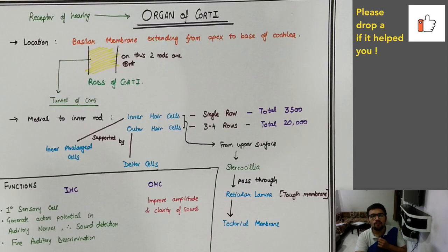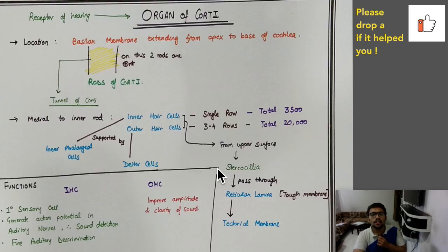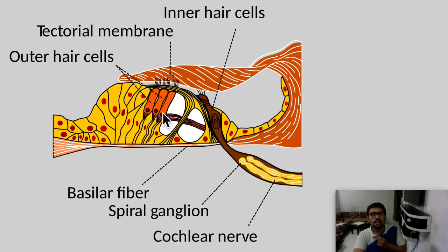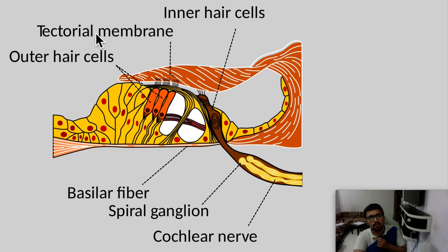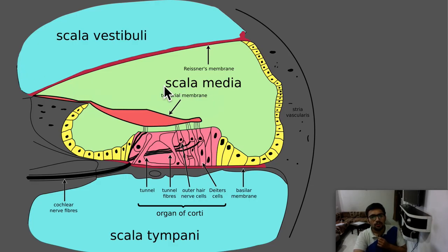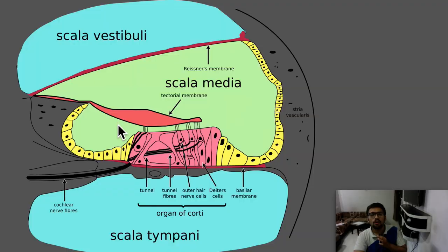From the upper surface of the inner and outer hair cells, cilia project — these are called stereocilia. The stereocilia pass through the reticular lamina, which is a tough membrane, and then reach the tectorial membrane. The tectorial membrane is the upper limit. There is also the stria vascularis, which is responsible for endolymph and perilymph production, but that is a more detailed anatomical topic.